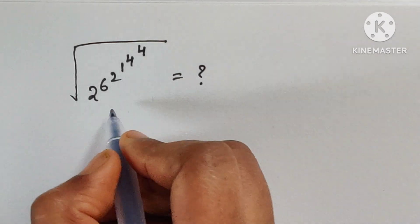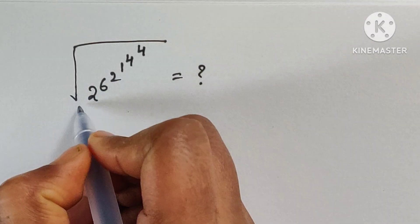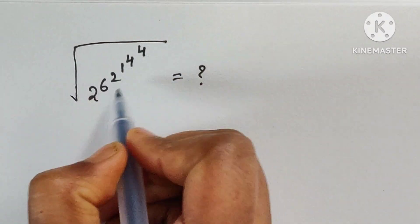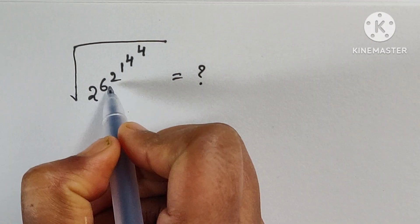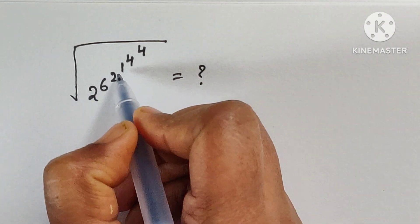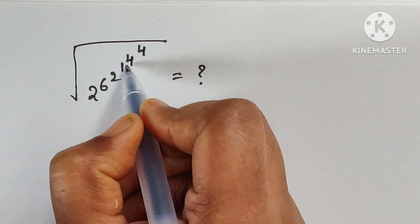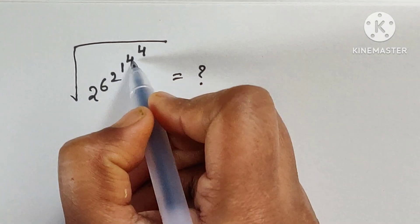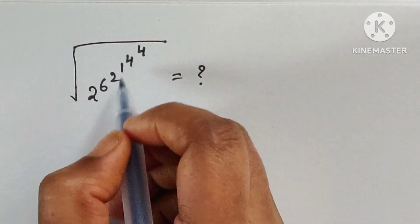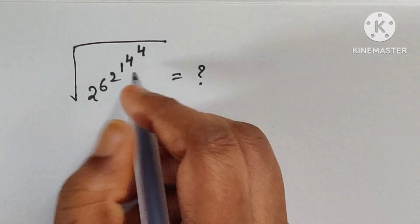Hello everyone, welcome back to our channel. Here we have one problem: the square root of 2 to the power 6, times 6 to the power 2, times 2 to the power 1, times 1 to the power 4, times 4 to the power of 4. So how do we solve this problem? Let's see the solution.